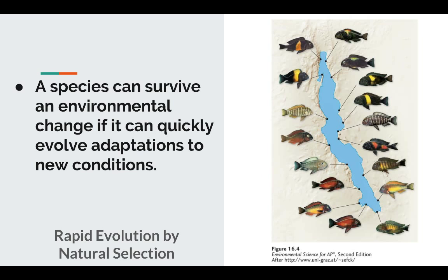Rapid evolution is where organisms can survive environmental change and quickly adapt to new conditions. We see this in the cichlid populations in Lake Tanganyika in eastern Africa. What we have today is 200 different distinct colorful cichlid species that took about several million years to develop. They're now more specialized — some cichlids feed only on insects, some only on fish, and others on invertebrates like snails or clams. This is an example of quick adaptation in one location.